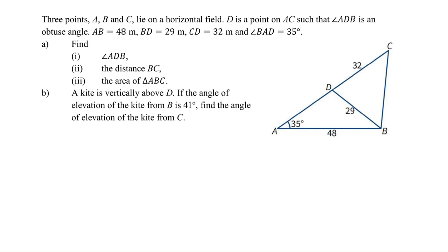Welcome to this question where we are given three points A, B, C on a horizontal field and point D is on AC. This is an important piece of information. Angle ABD is an obtuse angle, meaning it will be bigger than 90 degrees but less than 180 degrees.